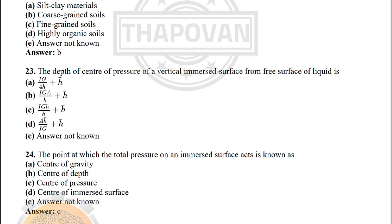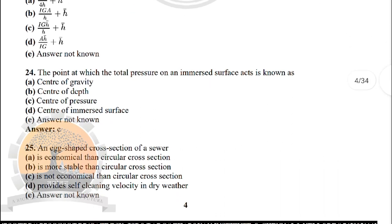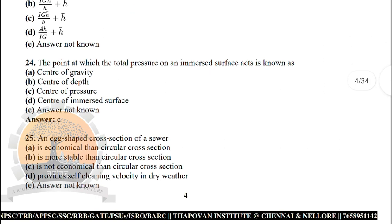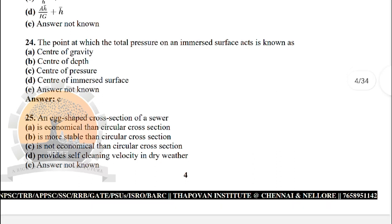Next: the depth of the centre of pressure of a vertical immersed surface from the free surface of liquid — no answer identified. Next: the point at which the total pressure on an immersed surface acts is known as — the correct answer is: centre of pressure.